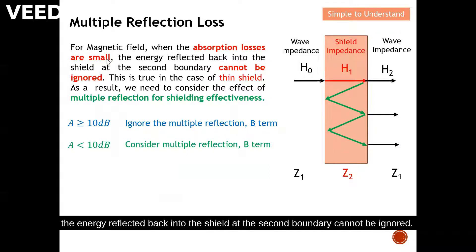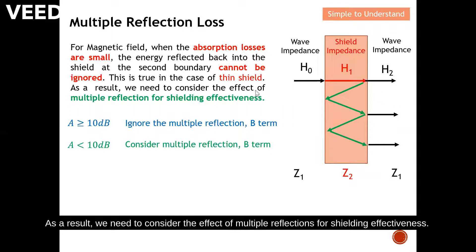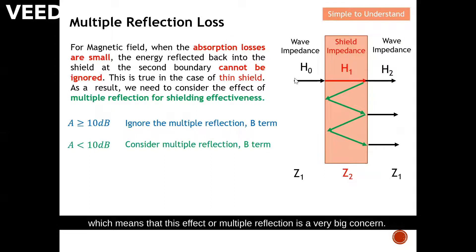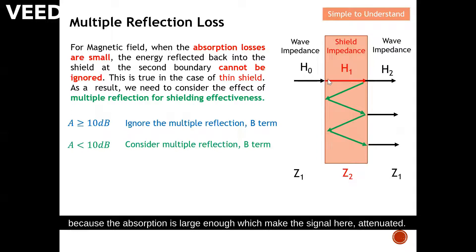For a magnetic field, when the absorption loss is small, the energy reflected back into the shield at the second boundary cannot be ignored. This is true in the case of a thin shield, so we need to consider the effect of multiple reflection on shielding effectiveness. For example, with a very thin shield, multiple reflection is a big concern. However, if the shield is very thick, the absorption is large enough to attenuate the signal, and the effect of multiple reflection can be neglected.